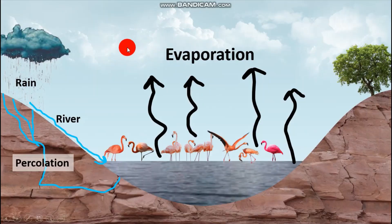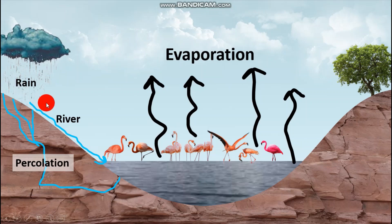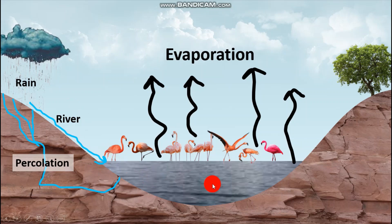We also have the chemically formed sedimentary rocks. These are rocks which are formed through chemical processes, and there are two types. The first involves evaporation leading to the formation of sedimentary rocks. When it rains in hot areas, we have infiltration, percolation, surface runoff, overland flow, and that water will move into lakes.